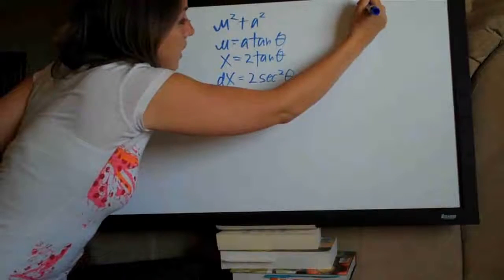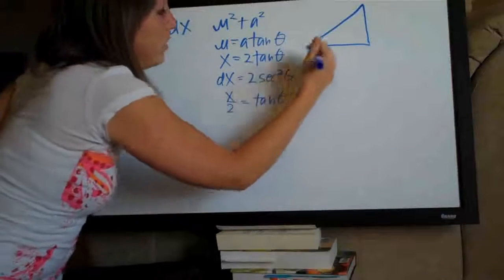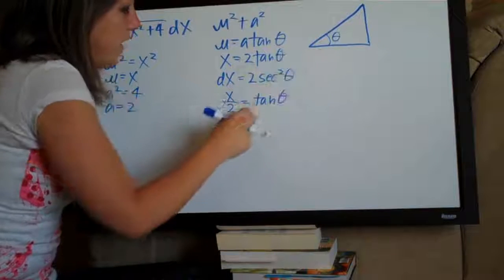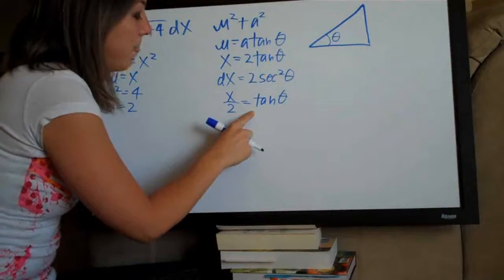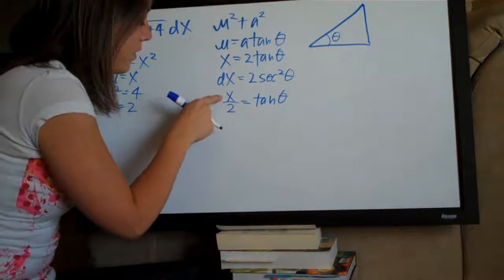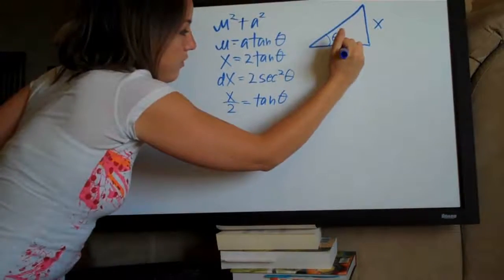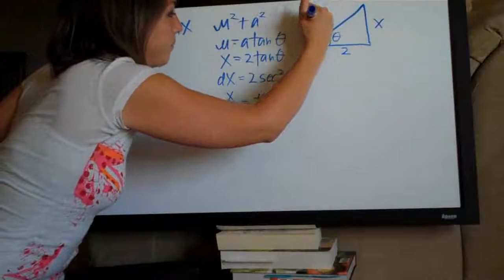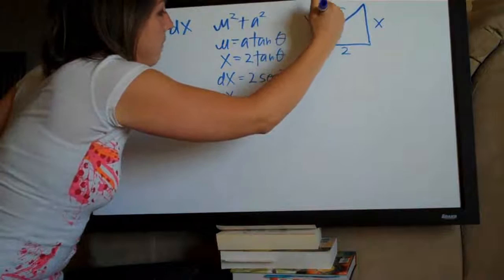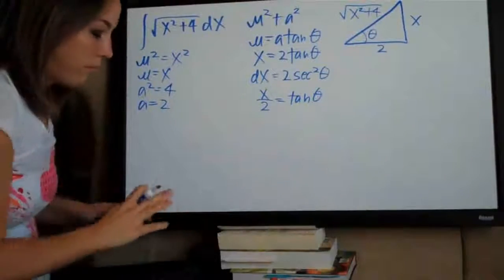We're also going to need our trigonometric substitution reference triangle for tangent. We draw the reference triangle and place theta in the corner. Since we know that tangent is opposite over adjacent, and tangent of theta equals x over 2, opposite is x and adjacent is 2. Using the Pythagorean theorem, the hypotenuse is the square root of x squared plus 4. So we've built our reference triangle.